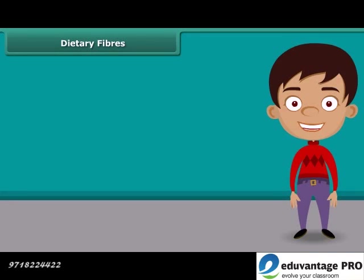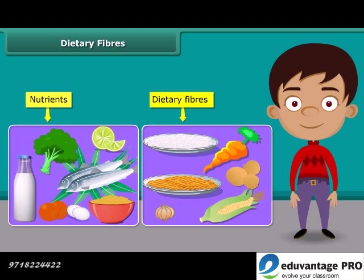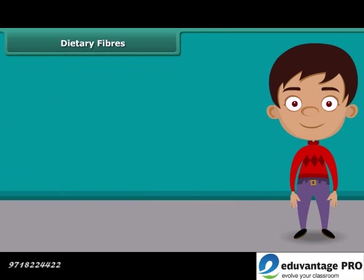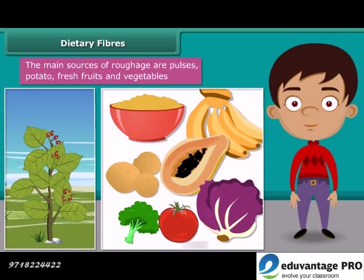Besides nutrients, dietary fiber also plays an important role in our body. Dietary fibers are usually known as roughage. Roughage does not provide any nutrition to our body but adds bulk. They are found only in plants. Pulses, potato, fresh fruits, and vegetables are the main sources of roughage. This helps our body to get rid of undigested food.